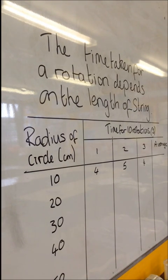There are three things that we could be looking at. We could be looking at the speed, we could be looking at the mass, or we could be looking at the radius of the circle. The experiment for the radius of the circle is the one that I've got set up for you here.